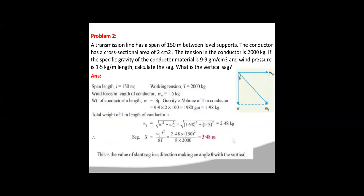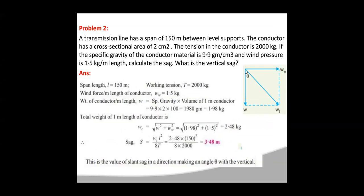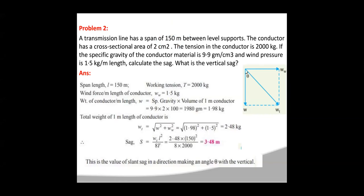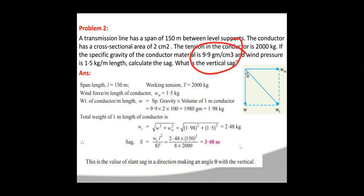Problem 2: A transmission line has a span of 150 meters between level supports. The conductor has a cross-sectional area of 2 cm². Tension in the conductor is 2000 kg. The specific gravity of the conductor is 9.9 g/cm³, and wind pressure is 1.5 kg/m. Calculate the sag and vertical sag. The weight of the conductor per meter W = specific gravity × volume = specific gravity × area × 100 cm = 9.9 × 2 × 100 = 1980 g = 1.98 kg/m.